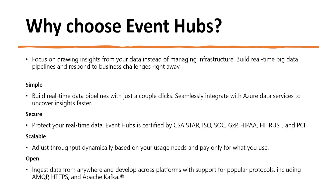Why choose Event Hubs? Using Event Hub we can focus on drawing insights and business logic instead of managing infrastructure. We can build real-time big data streaming pipelines and respond to business challenges right away without worrying about scale. It is very simple to set up with just a few clicks and configuration to enable end-to-end pipelines. It is secure and certified for ISO, SOC, HIPAA, PCI, and other standards. It is very scalable — we can adjust throughput dynamically based on usage and only pay for what we use. It supports open source protocols such as Apache Kafka, AMQP, and HTTPS.